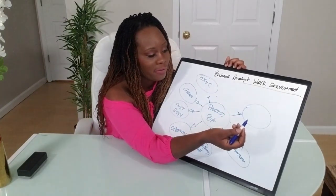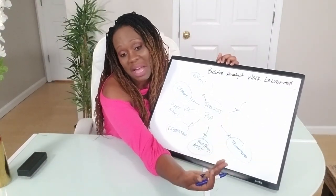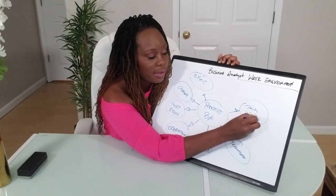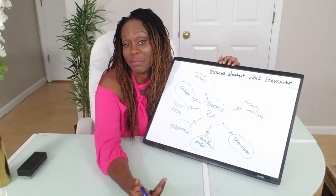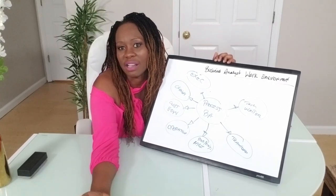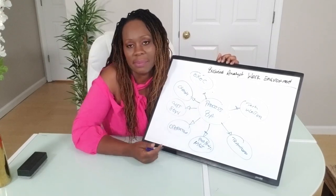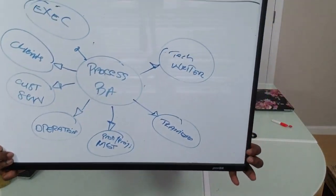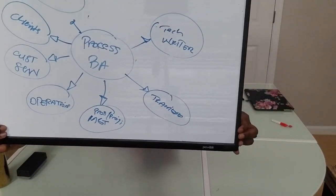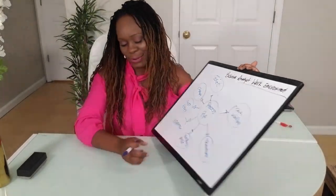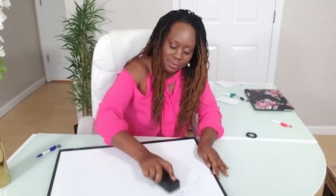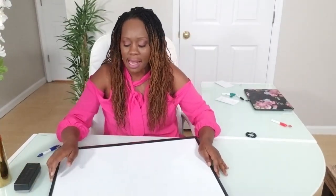Once you've finalized the process and gotten sign-off, you work closely with trainers so they can incorporate the new process and teach everyone how the new flow works. As a process BA, you're not usually changing software — it's more about defining the steps, where things start, where they end, and handoffs. You also handle documentation, though in some organizations there's a separate documentation specialist or technical writer who you'd collaborate with.